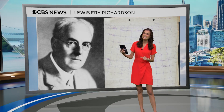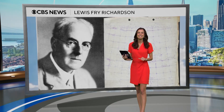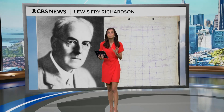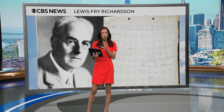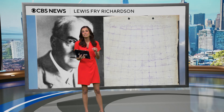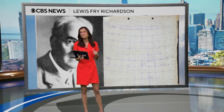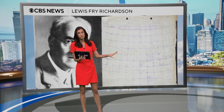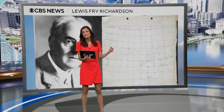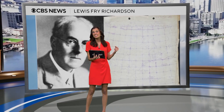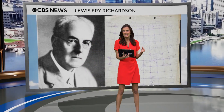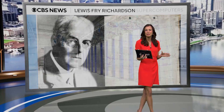Back in the early 1900s, this guy right here — Lewis Fry Richardson — is credited with creating the first numerical weather models, using only those physics and math equations to predict the weather six hours into the future. This is one of those early models, but the caveat was it took him about six weeks to complete all of those calculations by hand, so it wasn't extremely useful.